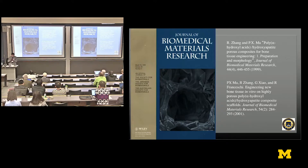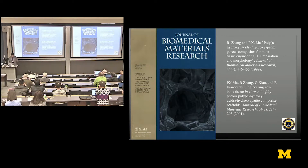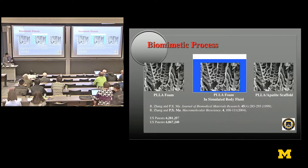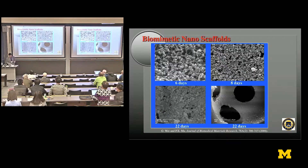We then started thinking about how to mimic bone, because bone has not only organic materials but also inorganic minerals. Maybe the minerals play a role. We started designing composite materials — polymers combined with minerals. This paper, now cited around 900 times, was also published in an impact factor 2 journal because at the time that was the best we could do. We developed ways to grow those minerals on the polymer surface to enhance bone formation, but it took many days to grow those minerals on all the nanofibers.